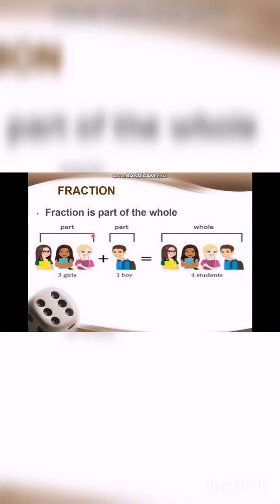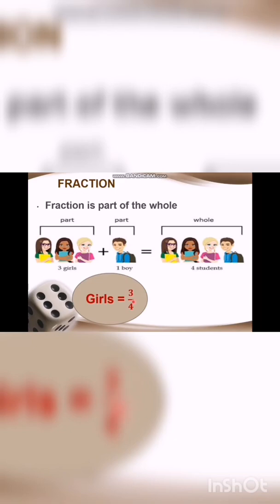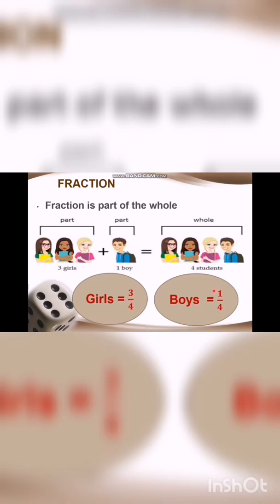In three by five, three is the number of apples and five is the total number of fruits. This is how you explain fraction of a set. As everybody knows, fraction is a part of the whole. We have three girls and one boy — these are the parts and the whole is four students. The fraction of girls is three by four, and the fraction of boys is one by four.